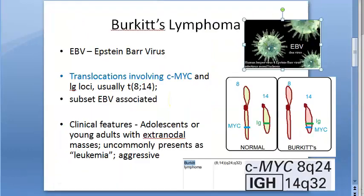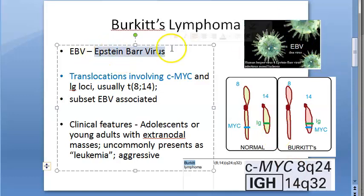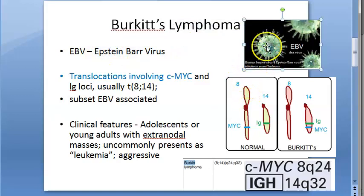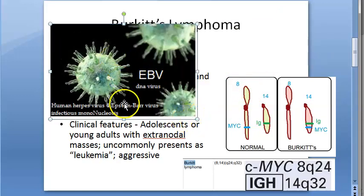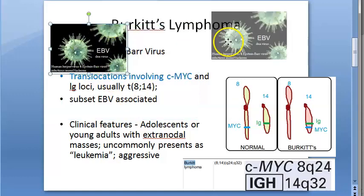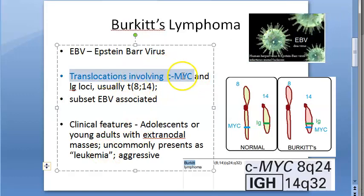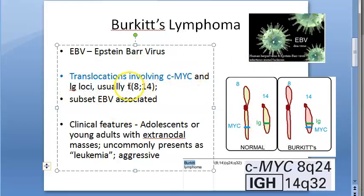Why can this translocation happen? There are oncogenic viruses — Epstein-Barr virus is one such oncogenic virus. Because of this virus, this translocation may happen. Epstein-Barr virus is a DNA virus, it is human herpes virus 4, and it causes infectious mononucleosis. This EBV can lead to translocation involving CMYC, which is a proto-oncogene, getting translocated to the IG loci. In the exam you will write t(8;14) — that is the translocation.